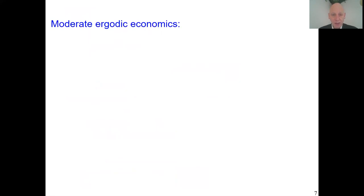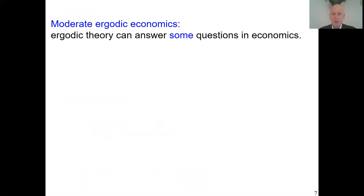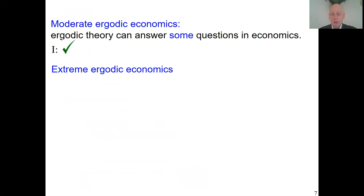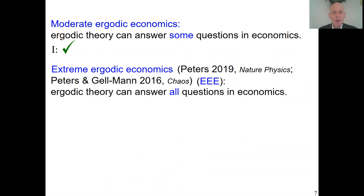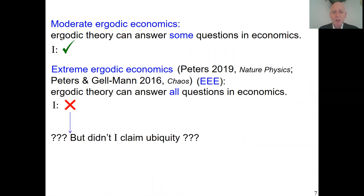A moderate view on Ergodic Economics that I agree with says ergodic theory is useful, gives valuable new insights, and can answer some questions in economics. An extreme view of Ergodic Economics — I disagree — says ergodic theory can answer all questions in economics. You may be amazed because a moment ago I said the figure was ubiquitous and captures everything. So then why can't it explain everything? That has to do with the ubiquity fallacy. In general, if something is present everywhere, it doesn't mean it can explain everything. To claim otherwise is the ubiquity fallacy.